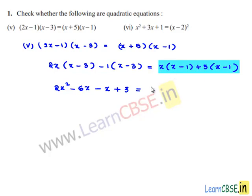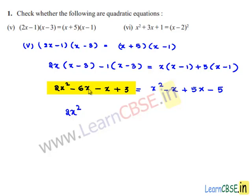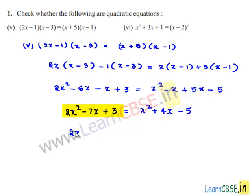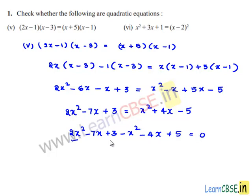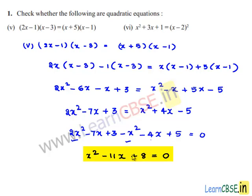So the left hand side is 2x squared minus 6x minus x plus 3, which gives 2x squared minus 7x plus 3. The right hand side is x squared minus x plus 5x minus 5, which gives x squared plus 4x minus 5. Transposing right hand side terms to the left gives minus x squared minus 4x plus 5 equals 0, so the equation becomes x squared minus 11x plus 8 equals 0.